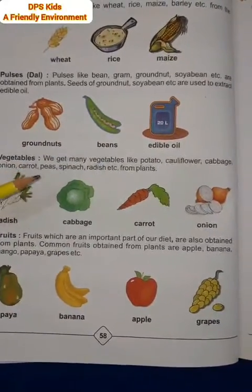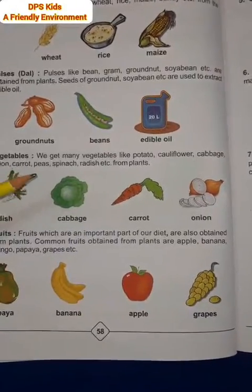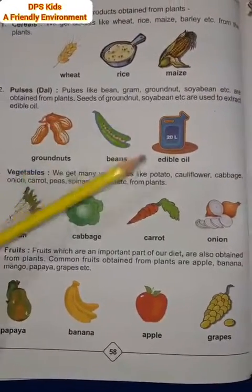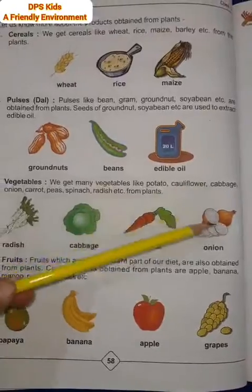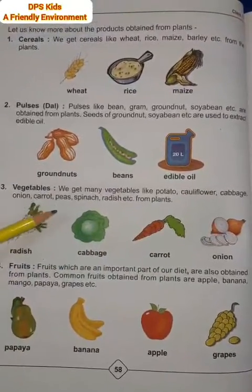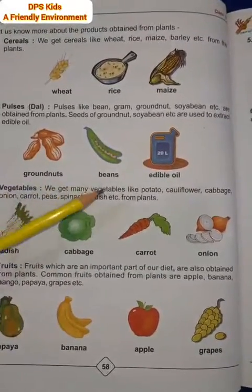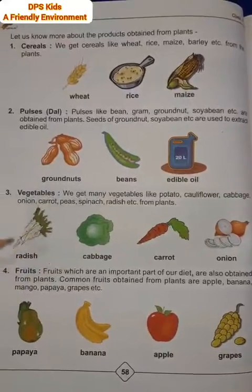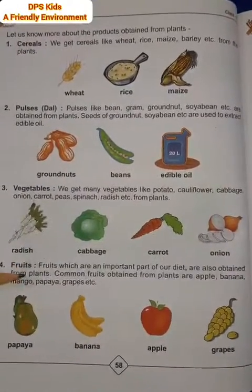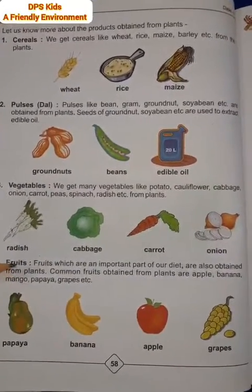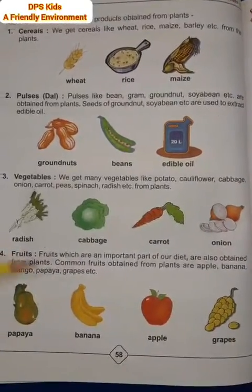Vegetables — हम जितनी भी vegetables खाते हैं वो सब हमें plants से मिलती हैं। For example: potato, cauliflower, cabbage, onion, carrot, peas, spinach, radish, etc. यह सब हमें plants से मिलते हैं। Fruits भी हमें plants से ही मिलते हैं, जो कि हमारी diet का बहुत important part होते हैं।